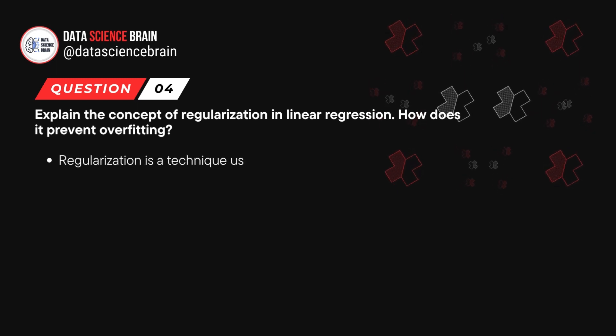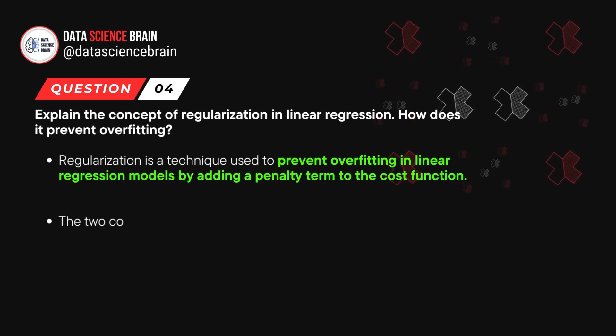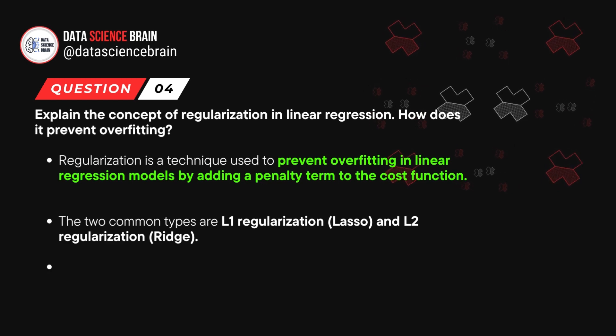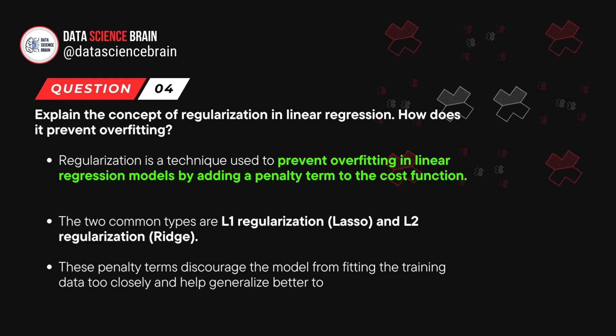Regularization is a technique used to prevent overfitting in linear regression models by adding a penalty term to the cost function. The two common types of regularization are L1 regularization, also known as lasso regularization, or L2 regularization, also known as ridge regularization. These penalty terms discourage the model from fitting the training data too closely and help generalize better to new unseen data.